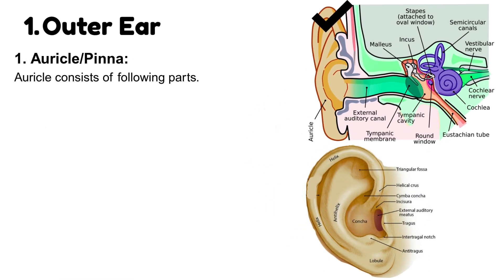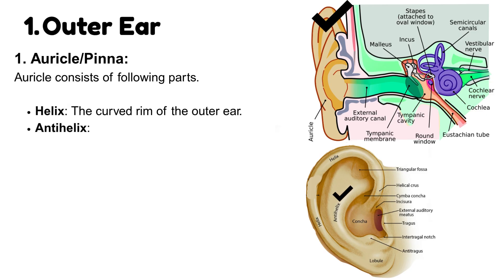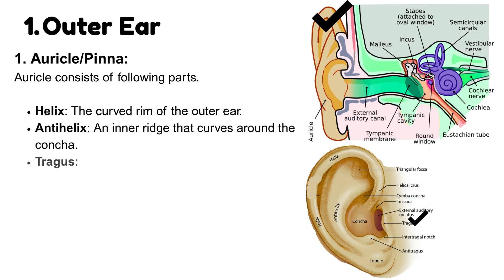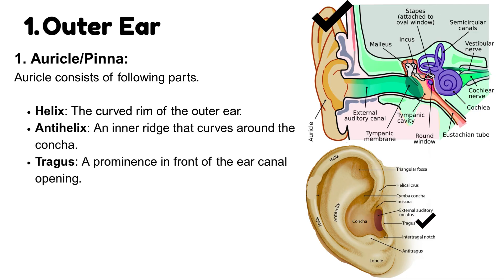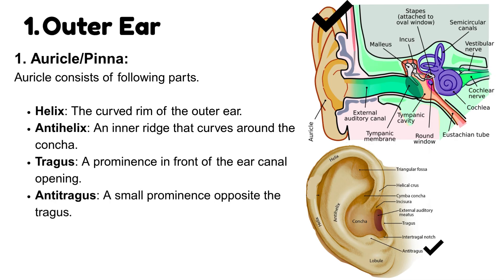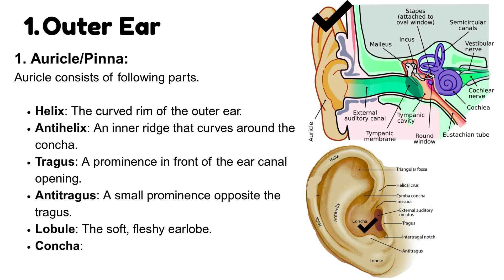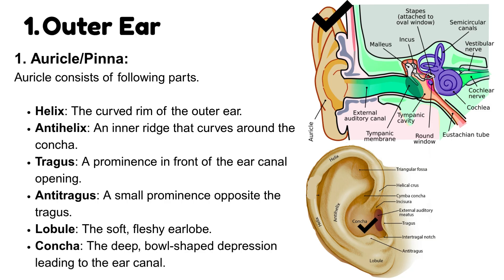The auricle consists of the following parts: Helix — the curved rim of the outer ear. Anti-helix — an inner ridge that curves around the concha. Tragus — a prominence in front of the ear canal opening. Anti-tragus — a small prominence opposite the tragus. Lobule — the soft, fleshy earlobe. And concha — a deep bowl-shaped depression leading to the ear canal.